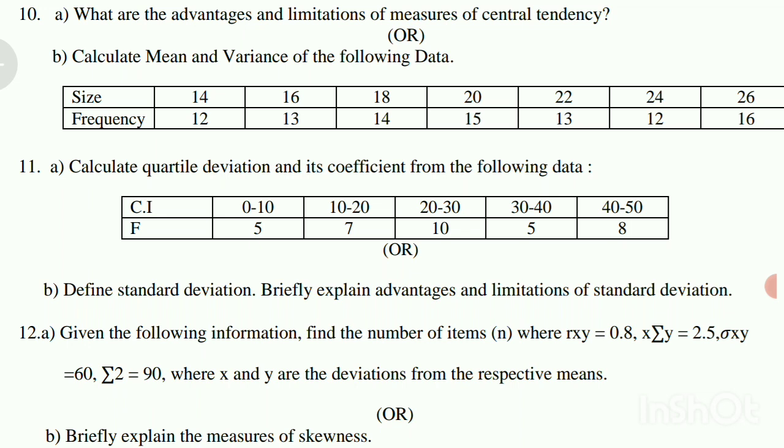And then there's another symbol. I don't have a clear idea of all the symbols. Sigma squared equals 90, where x and y are the deviations from the respective means. I will tell you the symbols in the comments.